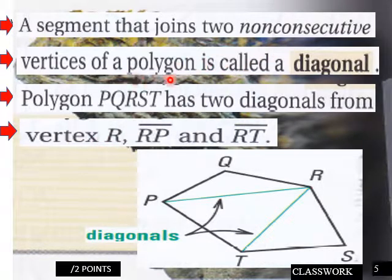They're connecting two non-consecutive vertices of a polygon. So RP and RT, so RP and RT are diagonals.